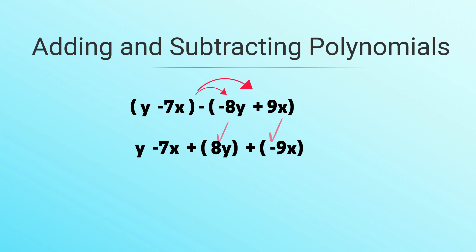Let's combine like terms. We have y plus 8y, that becomes 9y. And then we have negative 7x and negative 9x, that becomes negative 16x.